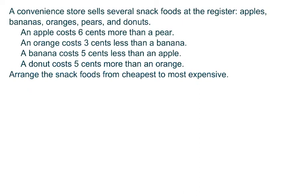So here's an example. A convenience store sells several snack foods at the register: apples, bananas, oranges, pears, and donuts. An apple costs six cents more than a pear. An orange costs three cents less than a banana. A banana costs five cents less than an apple. A donut costs five cents more than an orange. Arrange the snack foods from cheapest to most expensive.